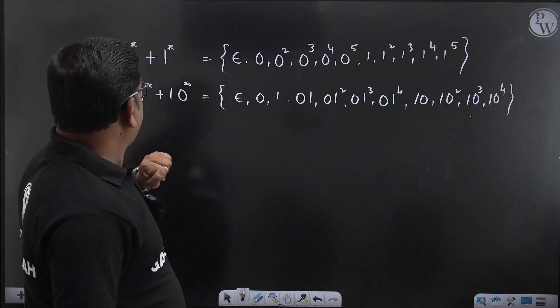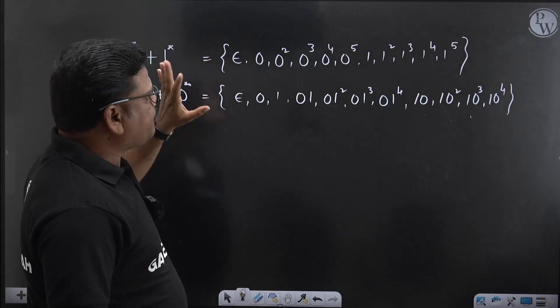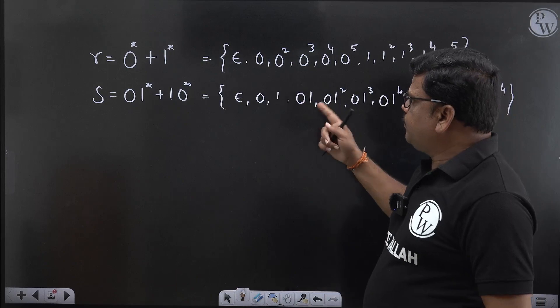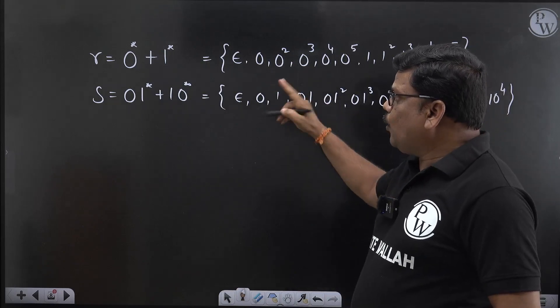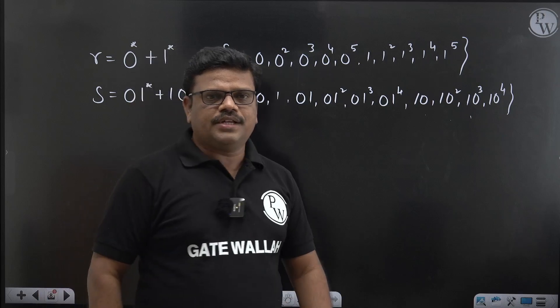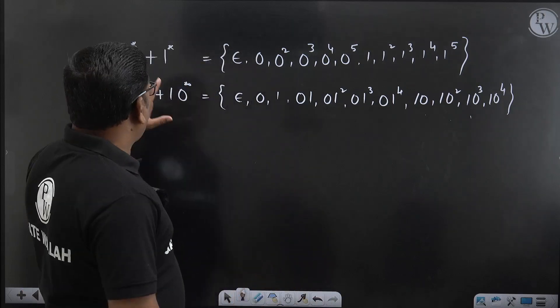I have calculated separately here from R up to 5 length what are the strings possible. Up to 5 length epsilon possible, only 0s. See this regular expression R, from the regular expression R we can generate only 0s or only 1s.